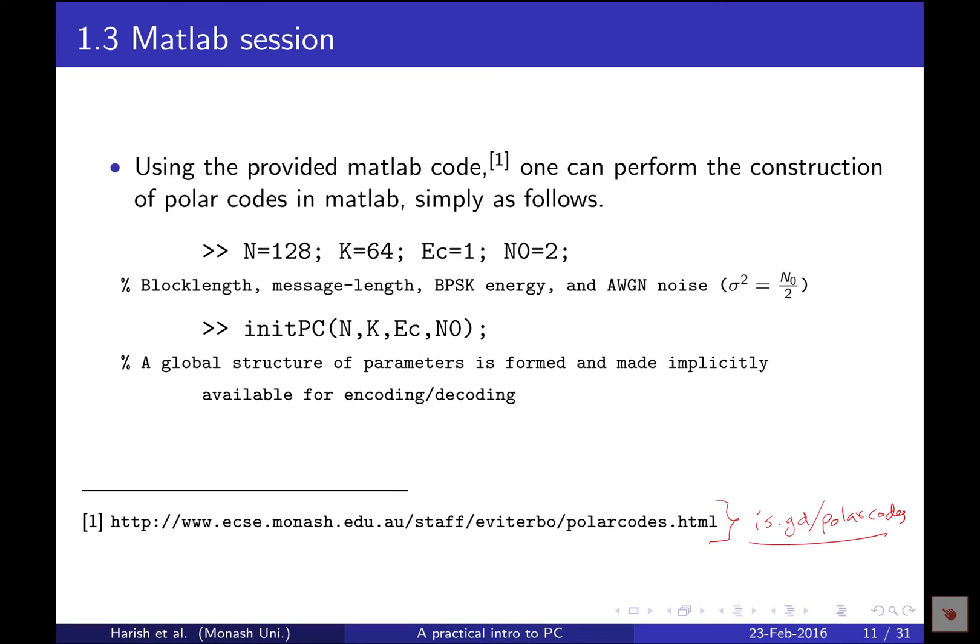Once you source that code base, for initializing, which includes the construction part of polar codes, simply give these essential parameters: the SNR you're going to use for coding, the block length, and the message length. Once we give those parameters using this function, the construction algorithm is implicitly called, the resulting K values are stored, and a global structure is formed. That will do whatever you want for encoding and decoding.